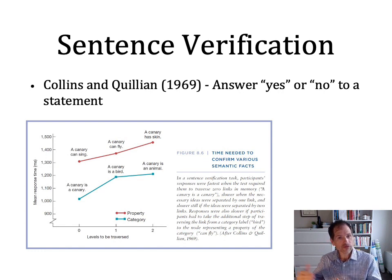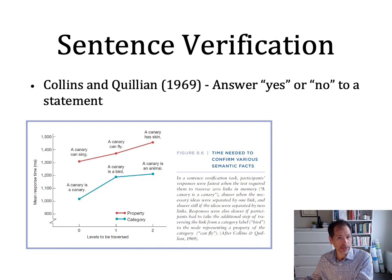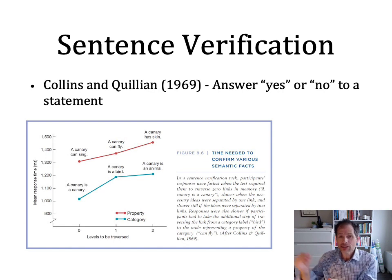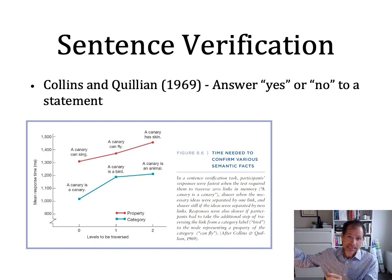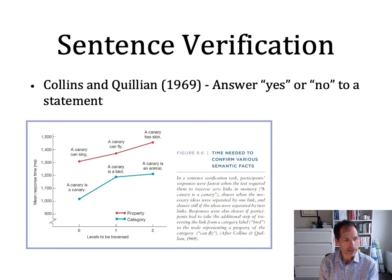What they found was that for some properties that were closely associated with the object, like singing — canaries can sing — people were really quick. But when they were further away, like canaries can fly, which is true of canaries but also true of other birds and even bats, it takes a little bit longer. And when you're asked, it has skin — well, yeah, canaries have skin, it's obvious, because they're birds, which are animals.